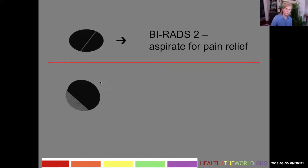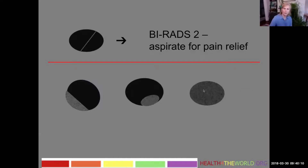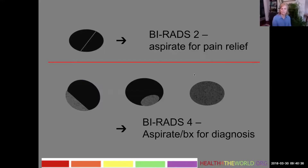They don't need any treatment unless the patient desires aspiration for pain relief. On the other hand, if we see a cystic structure that has some anechoic portions but more solid-looking components that are not dependent, or an intracystic mass — a mural mass growing off the wall — or diffuse low-level echoes internally, these are all more suspicious appearances. It's possible the last case with diffuse low-level echoes is just a complicated cyst, but it's also possible it's a solid lesion. You can't always tell sonographically unless you see these echoes move. We're going to call these BI-RADS 4 and either aspirate or biopsy these lesions for diagnosis.